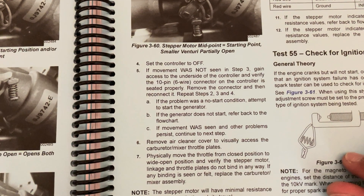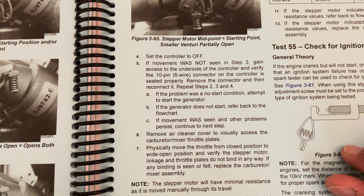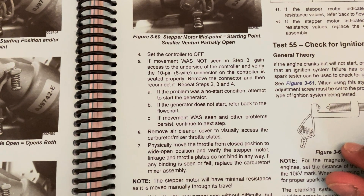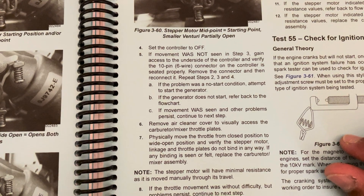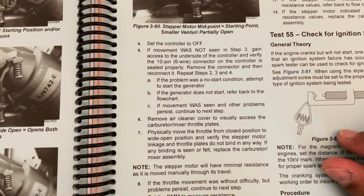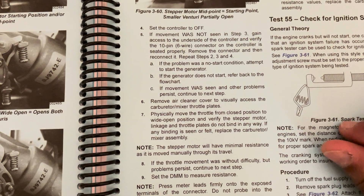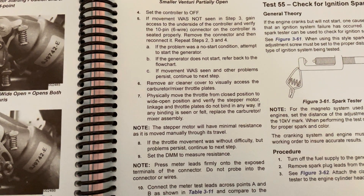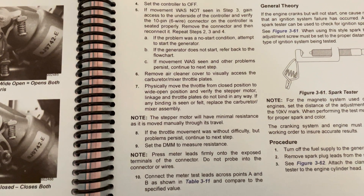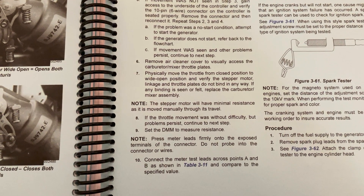If that does not fix your issue, let's keep looking in the book. If movement was seen but other problems persist, the next step is to remove the air cleaner cover to visually access the carburetor mixer throttle plates. Physically move the throttle from the closed position to wide open and verify that the stepper motor linkage and throttle plates do not bind in any way.